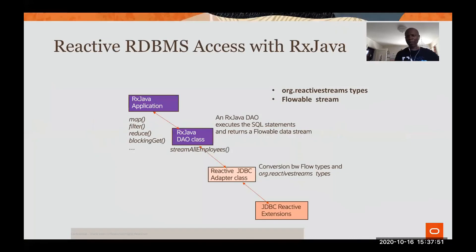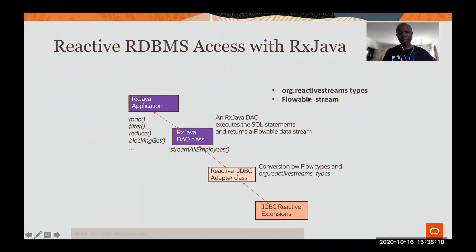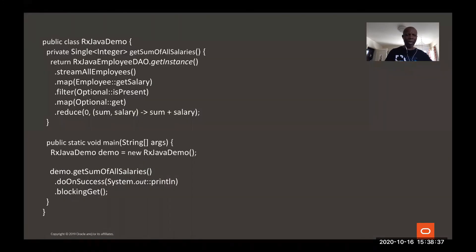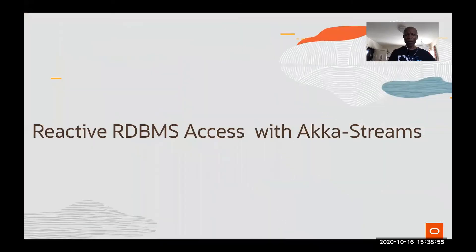Now RxJava. RxJava is also another reactive streams library, different from Reactor. It deals with org.reactivestreams types. Instead of Mono and Flux, it has what is called Flowable — Flowable is similar to Flux. You do the same steps: from the extension, you need an adapter class, then you build the RxJava DAO data access object class, then build the application. You can see map, filter, reduce, blockingGet — so it's similar to what you would do with Reactor. The finishing part is slightly different: instead of block(), it's blockingGet().